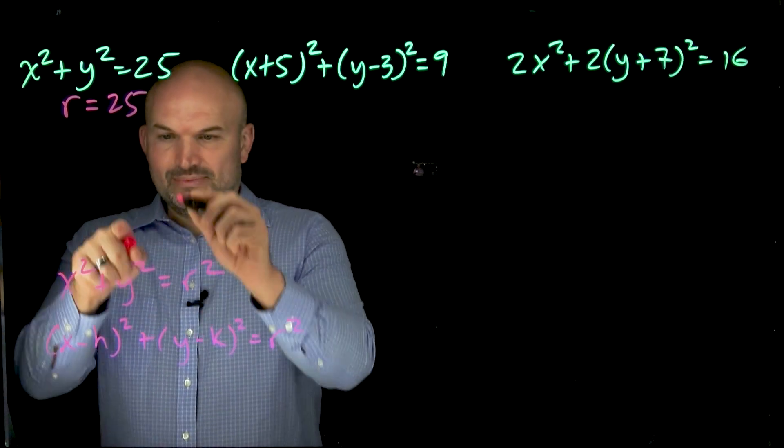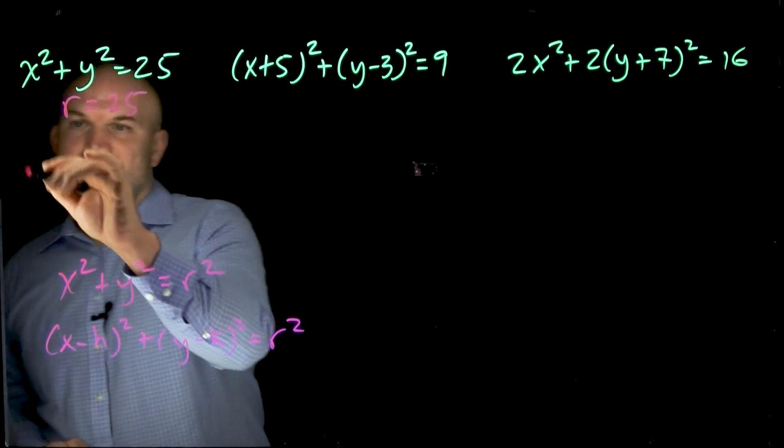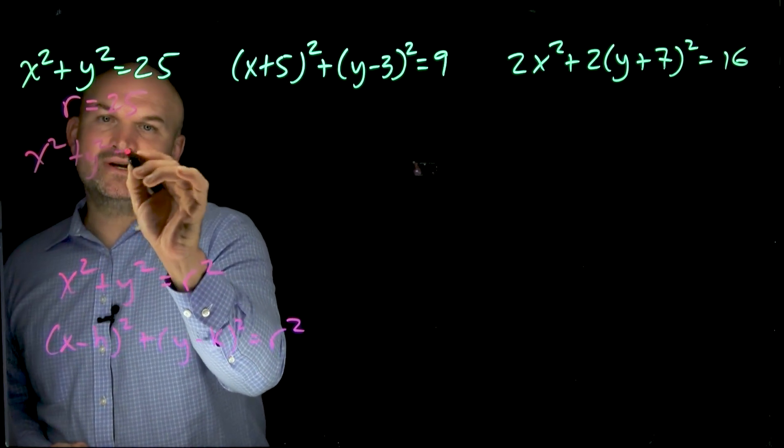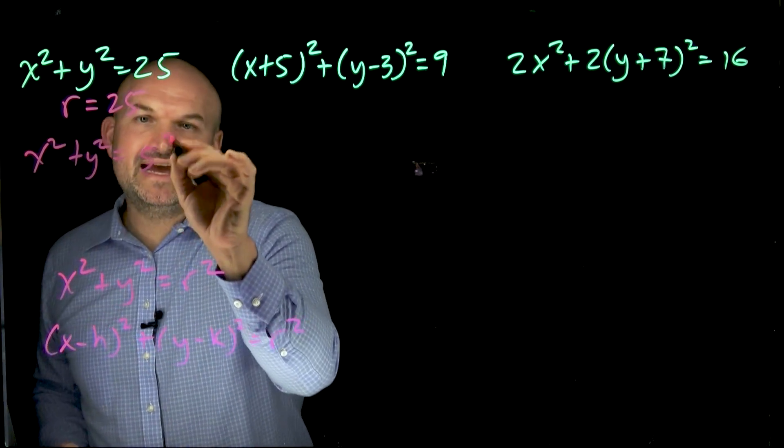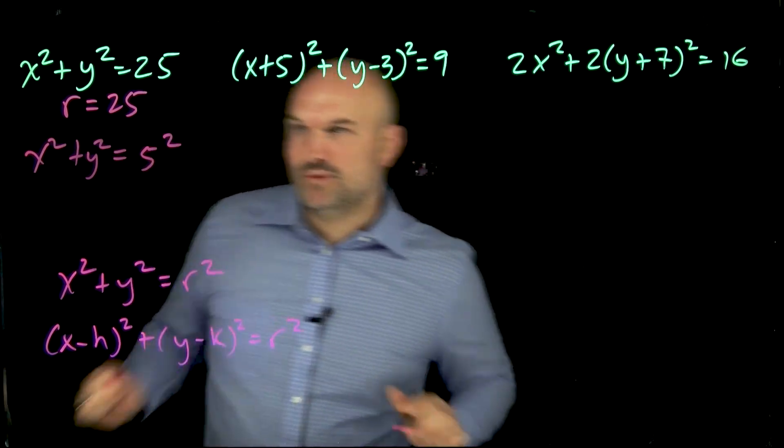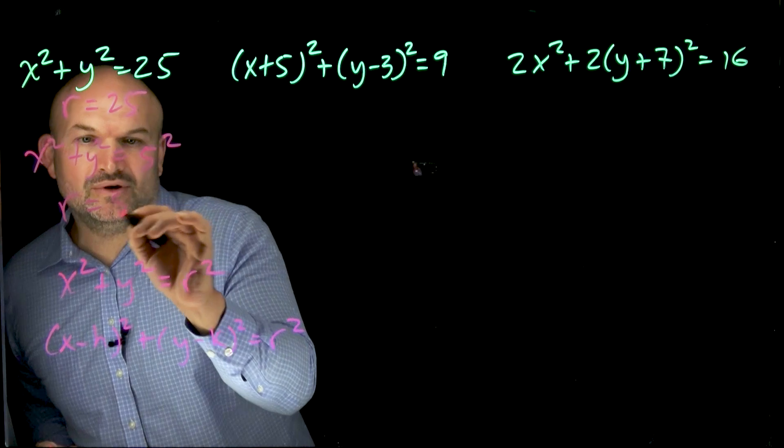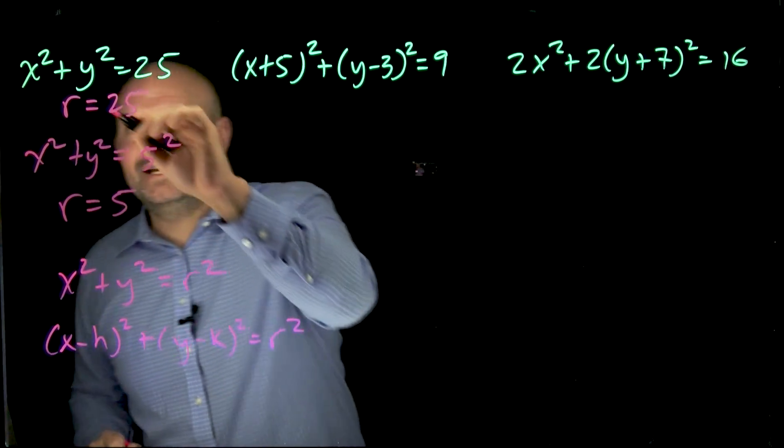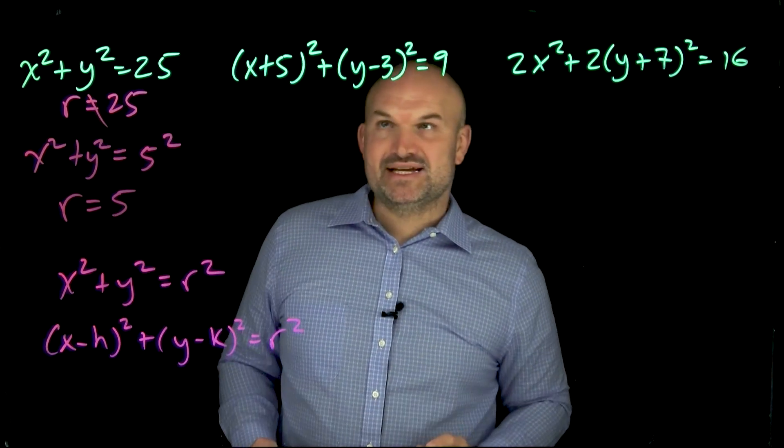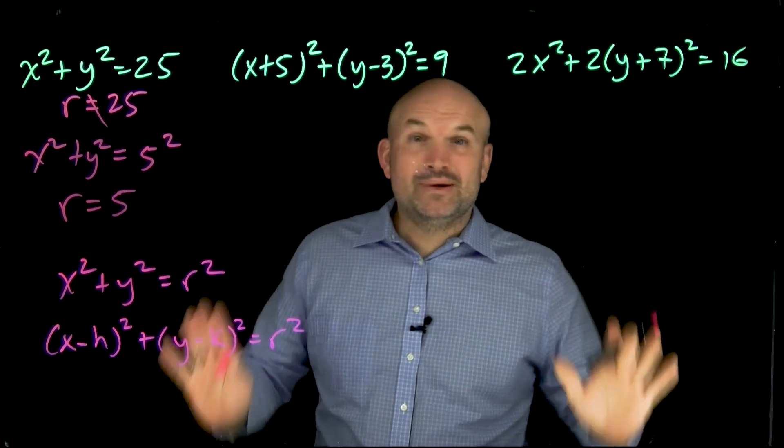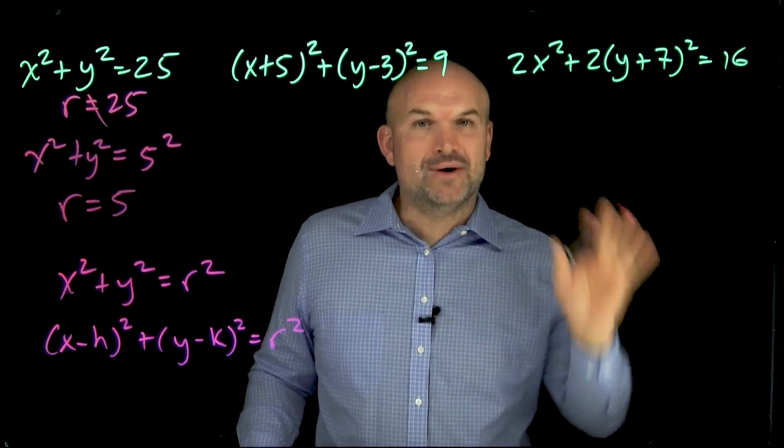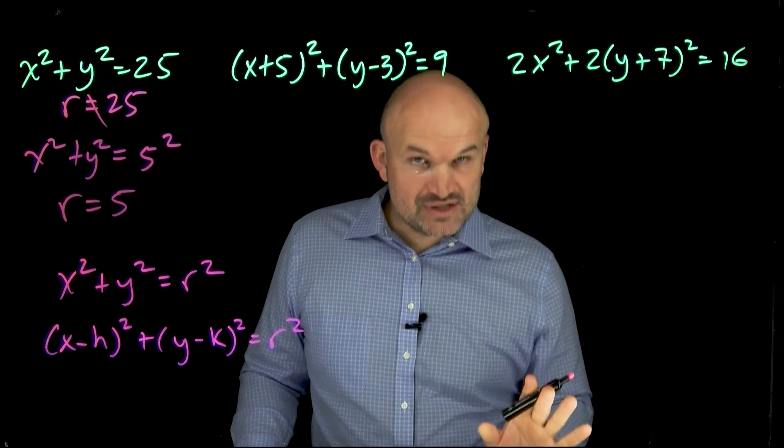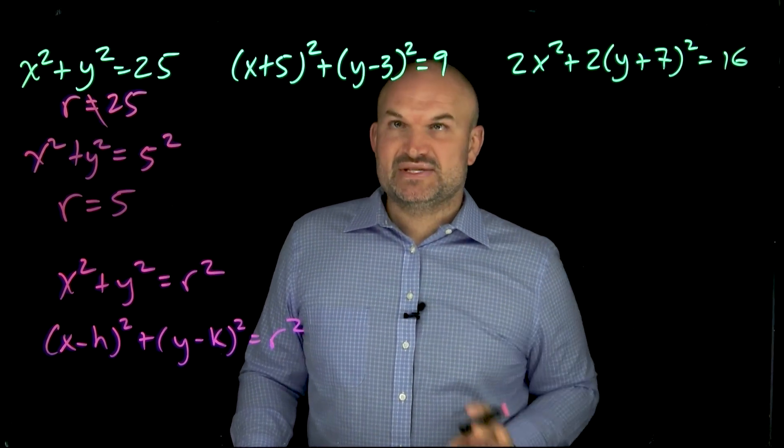Remember, guys, the formula is x squared plus y squared equals r squared. So it's x squared plus y squared equals what number squared equals a 25? That's going to be a 5 squared. So therefore, we can say the radius is going to equal a 5, not a 25. So let's not make that mistake. The next one happens again for everyone. So don't feel stupid. It happens all the time.